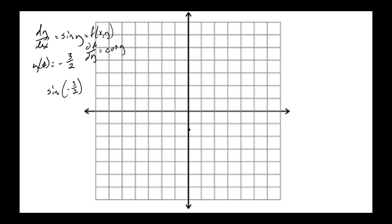Because there were no students here, I thought I'd better have my phone. So: 1.5, negate that, take the sine — that's negative 0.99. So your slope there is almost negative 1. Negative 1 would be going in that direction.